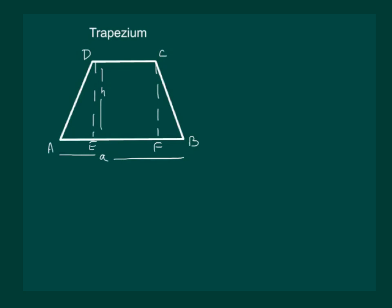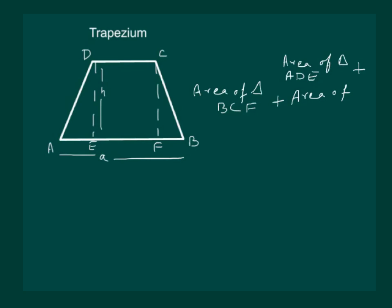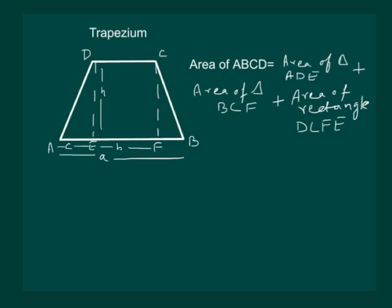Now we know that the area of trapezium abcd will be equal to the area of triangle ade plus area of triangle bcf plus area of rectangle. Let us denote ae by c, the length from e to f is b, and length from f to b equals d.